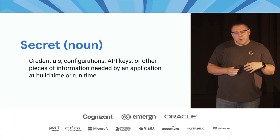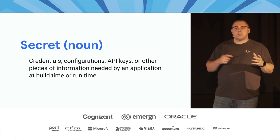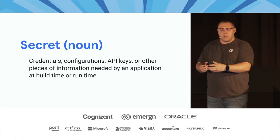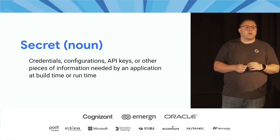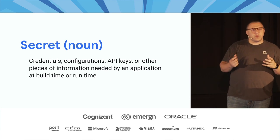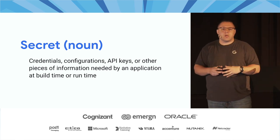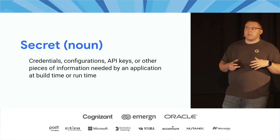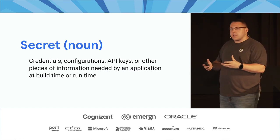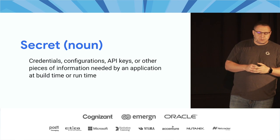Specifically, you may have a Twitter API key because you need to tweet something, or you may have a TLS certificate, a private key, or a public key because you need to secure communications. This is what we're talking about with respect to a secret — specifically an application secret or an infrastructure secret.